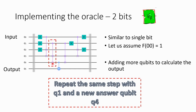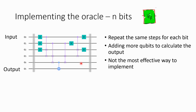Once we have q4, that will be stored in q5 and everything is reversed using the inverse gates. That is the two-bit implementation. And for the n-bit implementation, you repeat the same step by adding one extra qubit for the answer and adding one more CSWAP or AND with the new qubit and the previous answer. That's all you need to do.